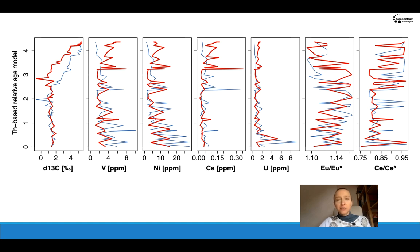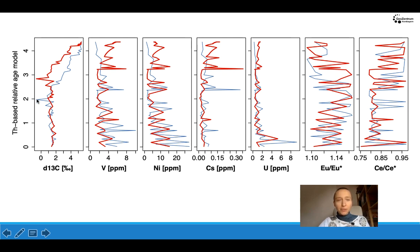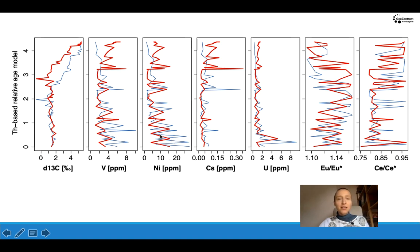I would like to show you the results using the thorium-based relative age model — this is the model that most strongly deviates from a constant deposition rate. On this figure the values are mapped into the time realm, so this is how the record of these events would look if we had a constant deposition rate. The thick red line shows the transformed values and the blue line in the background is the original signal. You can see that the onset of the carbon isotope excursion has moved up by almost a meter — it was in fact even more abrupt than it appeared in the section. The lower part of the section had a low deposition rate, which enhanced the peaks in redox sensitive elements, and after transformation they appear much less pronounced, and the decreasing tendency which we saw in the section has almost disappeared.